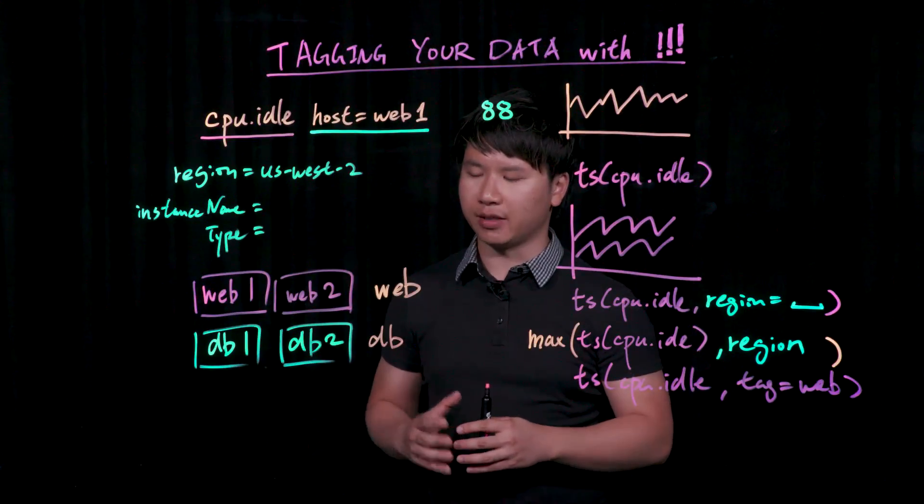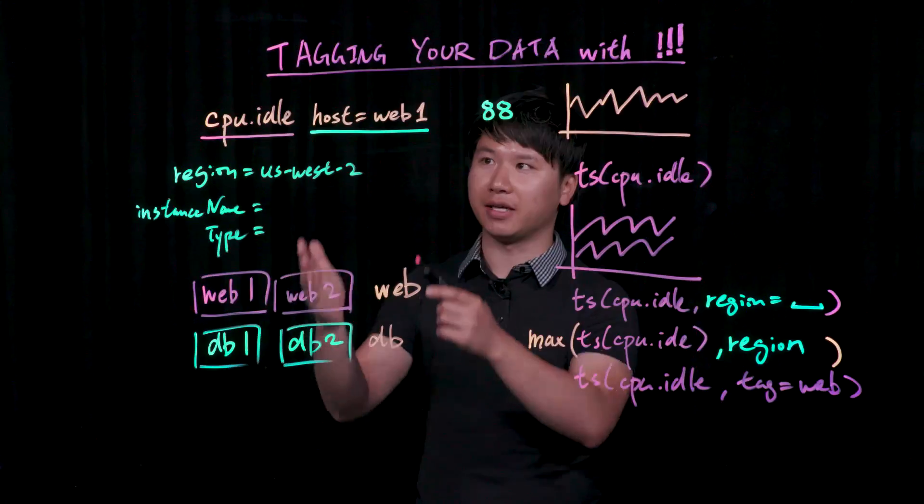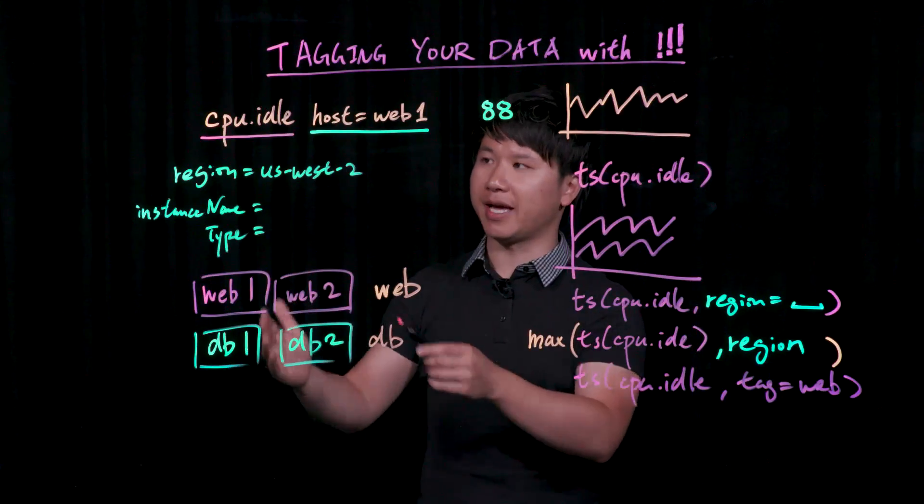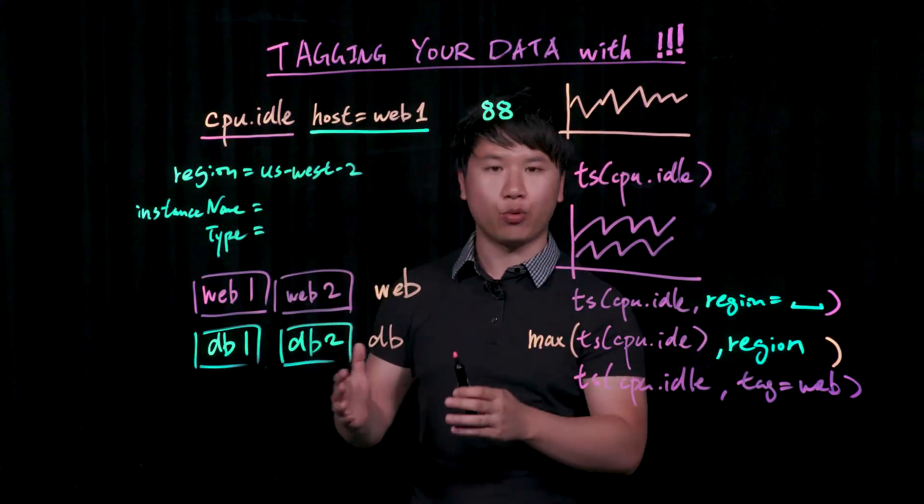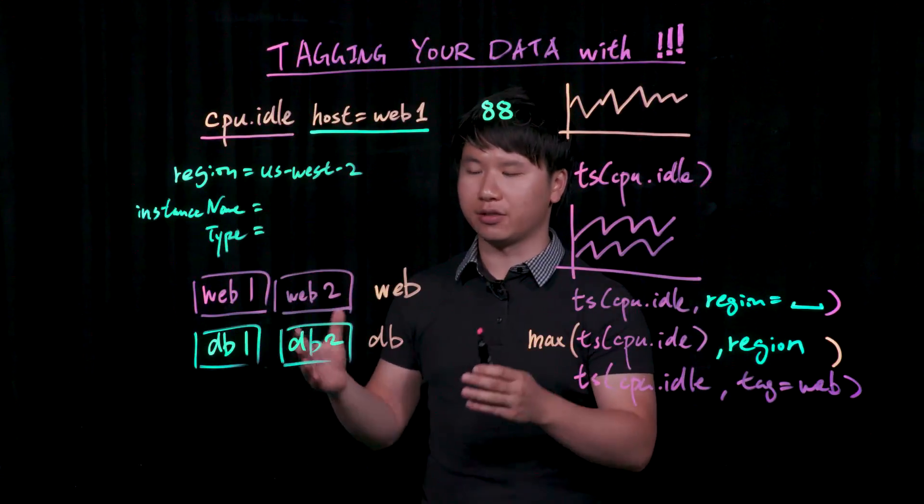A limitation of using source tags is that they must be tagging hosts, and they cannot be tagging metrics, for example, or any other dimensions. It is just a way for you to pull out related sources together.